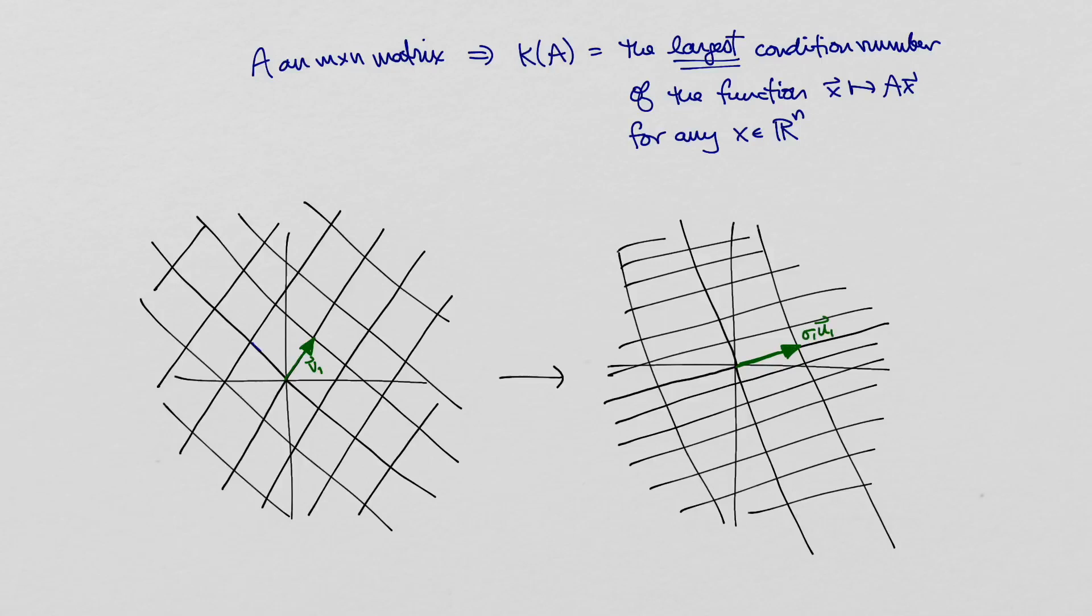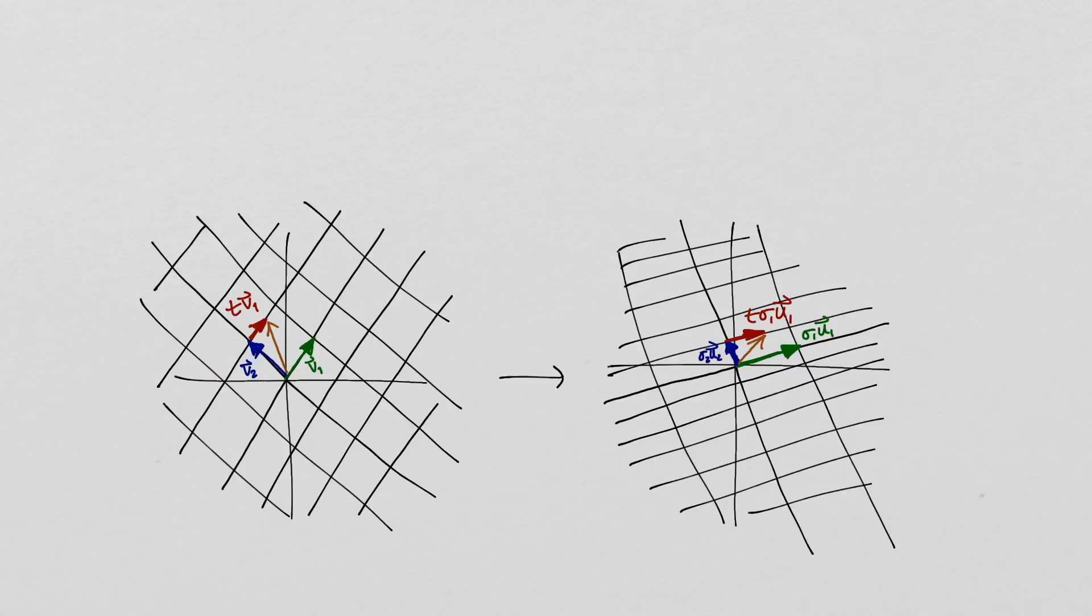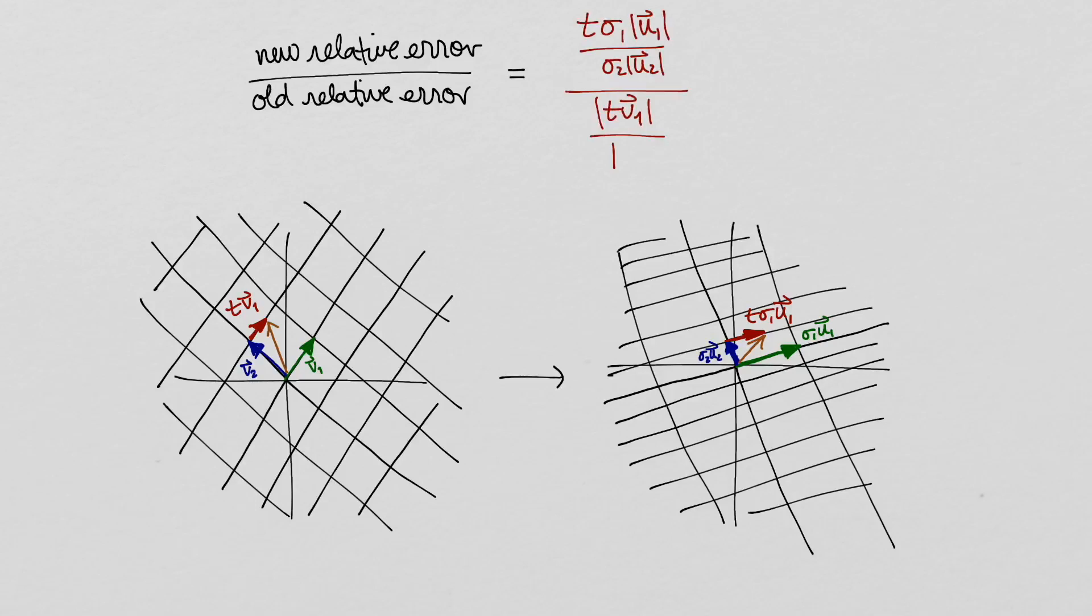Let Vmax and Vmin be the first and last columns of V, and let Umax and Umin be the first and last columns of U. If we apply A to Vmin and Vmin plus T times Vmax, then the images are sigma min times Umin and sigma min times Umin plus T times sigma max Umax. If T is small, then the relative change here is sigma max divided by sigma min.